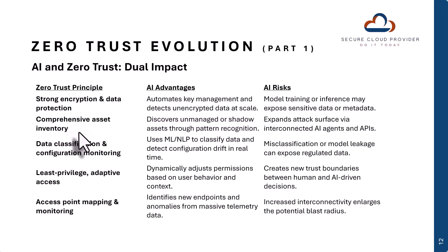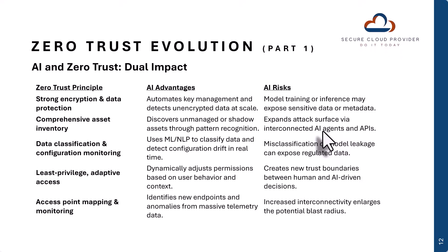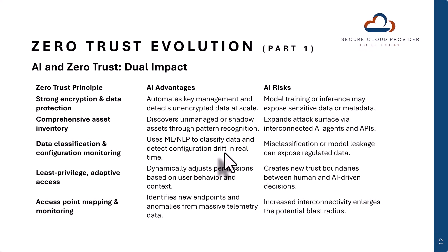In terms of comprehensive asset inventory, AI can discover unmanaged or shadow assets through pattern recognition. However, it also expands the attack surface via its interconnected AI agents and APIs — keeping in mind that APIs and AI agents are also assets. For data classification and configuration monitoring, AI can use ML and NLP to classify data and detect configuration drift in real time. However, it can also misclassify data and present model leakage, which can expose regulated data, so you need to build in checks for that.